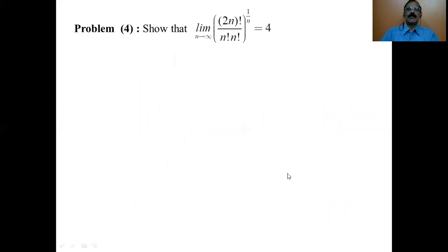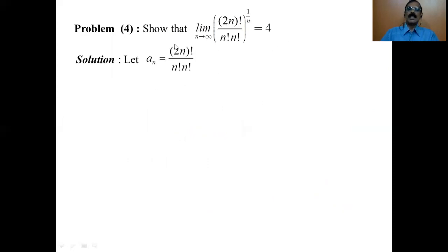Now we will show that the limit of 2n factorial divided by n factorial times n factorial, to the power 1/n, as n tends to infinity, equals 4. As before, a_n is the given expression except the power 1/n. Therefore a_n equals 2n factorial divided by n factorial times n factorial.